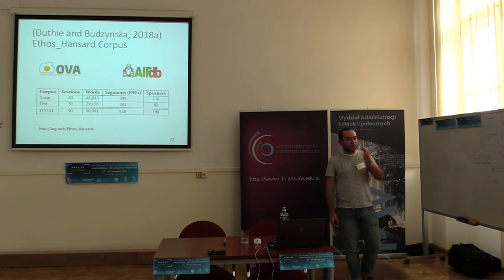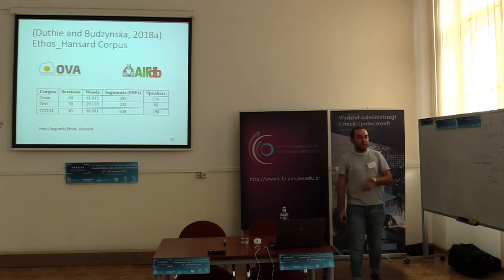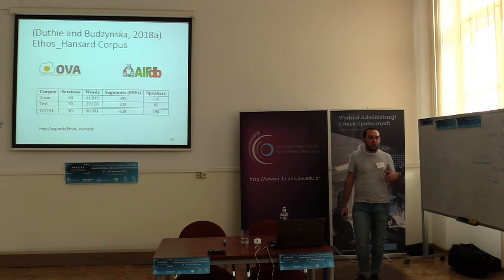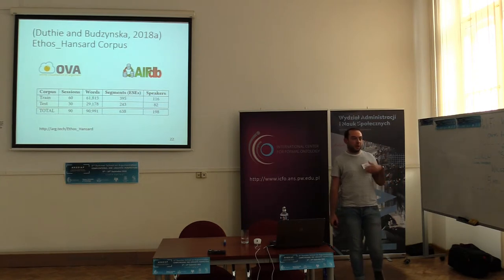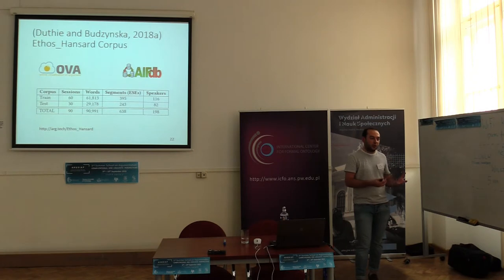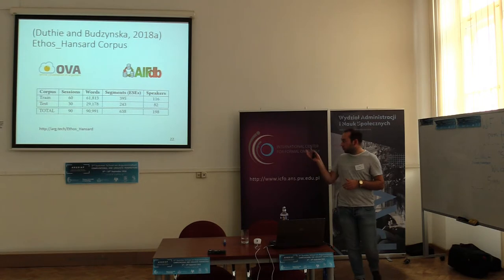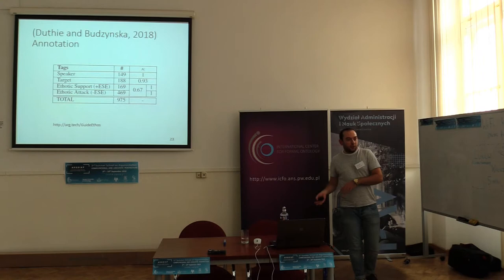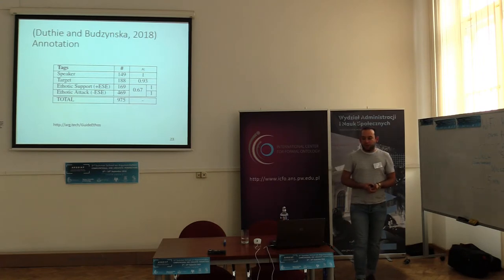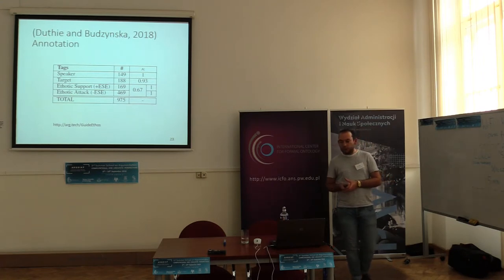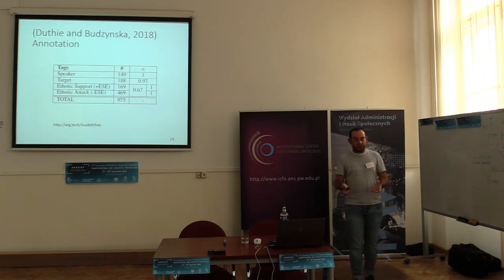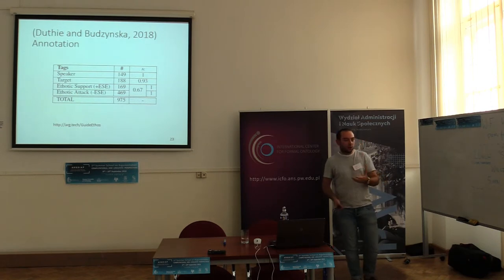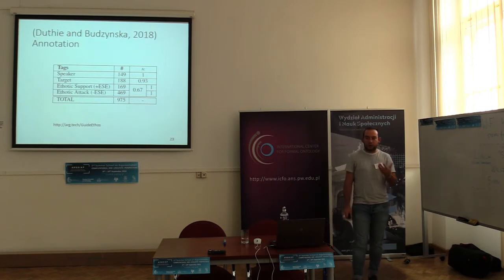We actually increased the size of the corpus by 30 transcripts and re-annotated all of the data. The idea being that in the first set of annotations it relied upon a lot of implicit or common knowledge, which didn't really show what's happening on the linguistic surface. So we re-annotated to a new set of guidelines. The overall kappa score for determining if a sentence is ethos or not stayed the same, but we actually improved our ability to determine who the target of each sentence was.